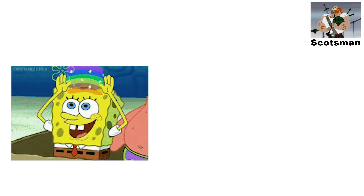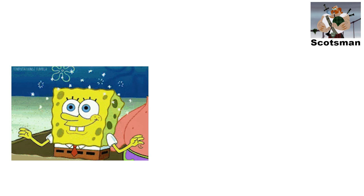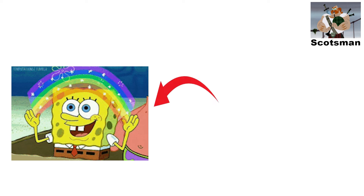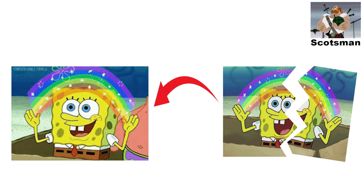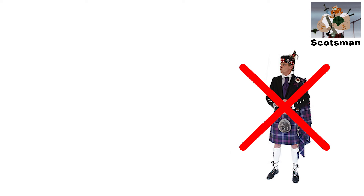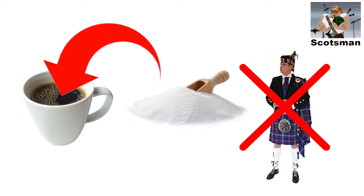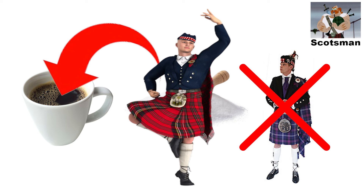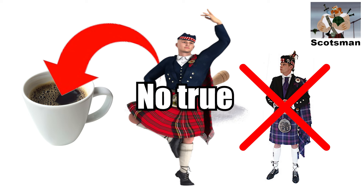No true Scotsman. This fallacy occurs when someone gives a generalization, but when countered with a break to their generalization, they reply by claiming the counter-example doesn't count because it's not a true example. For instance, no true Scotsman puts sugar in his coffee — and when someone mentions a Scotsman who does, the response is, well, no true Scotsman would.